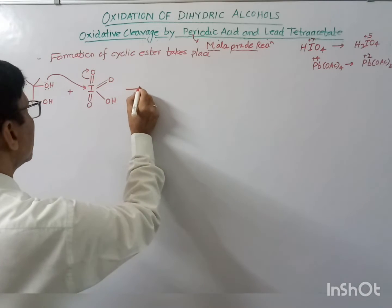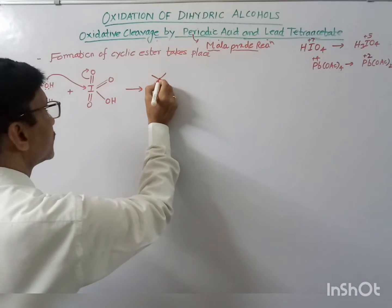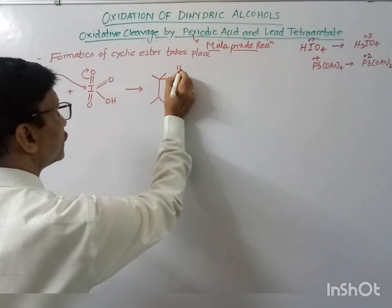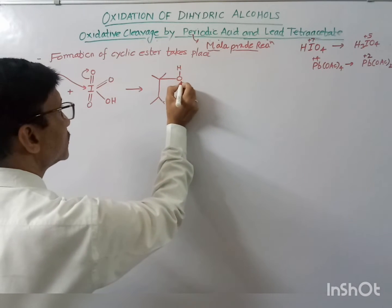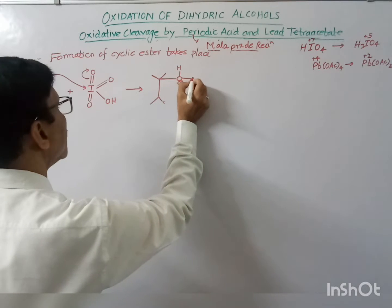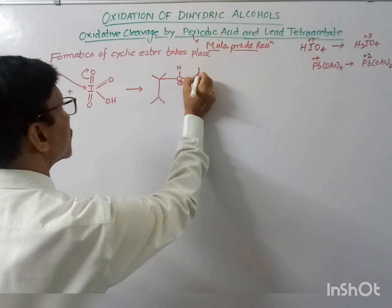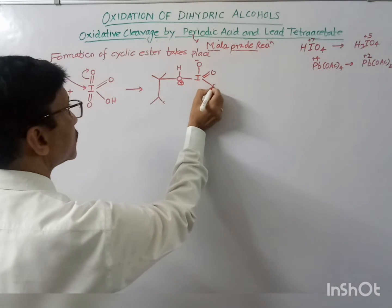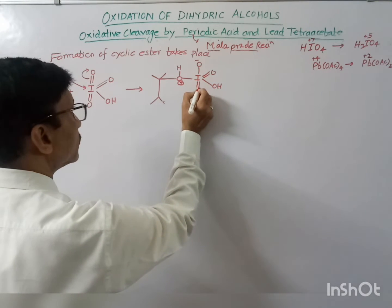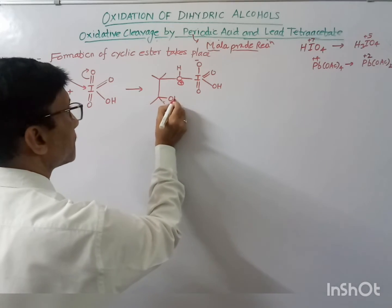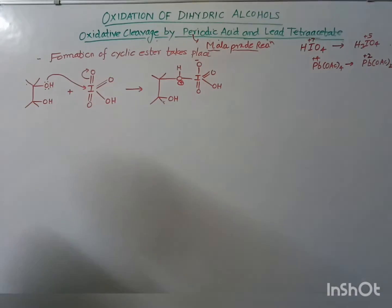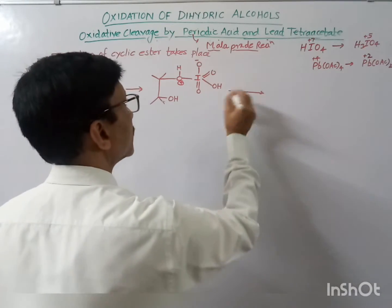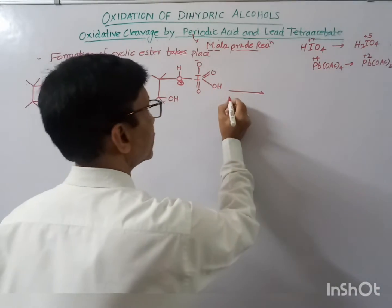After the pi bond breaks, a positive charge forms over the oxygen atom. In the next step, an internal proton transfer takes place.